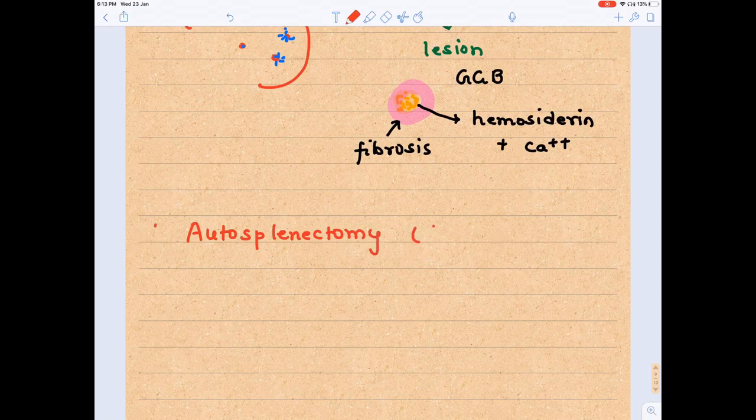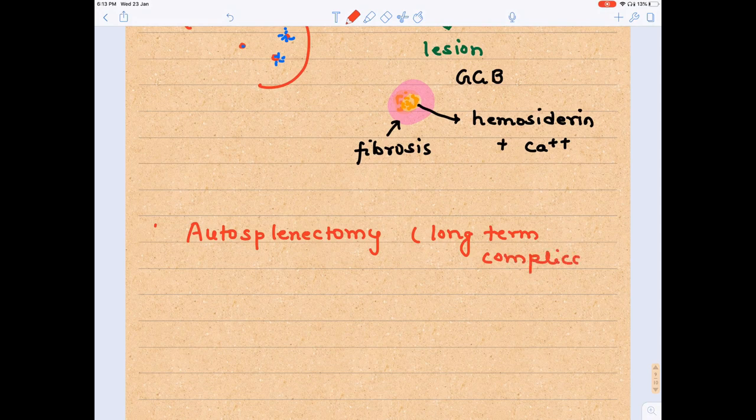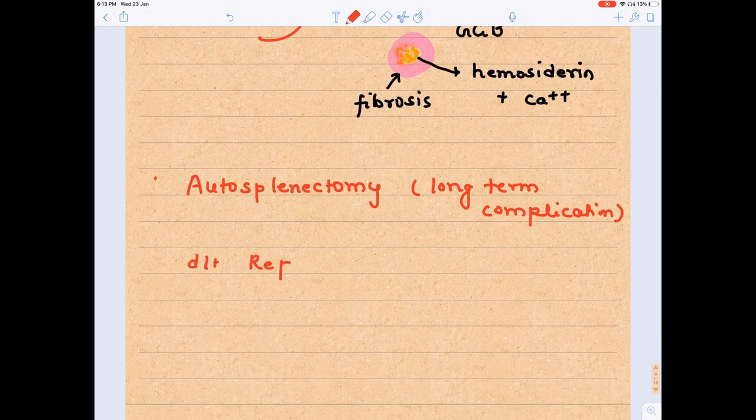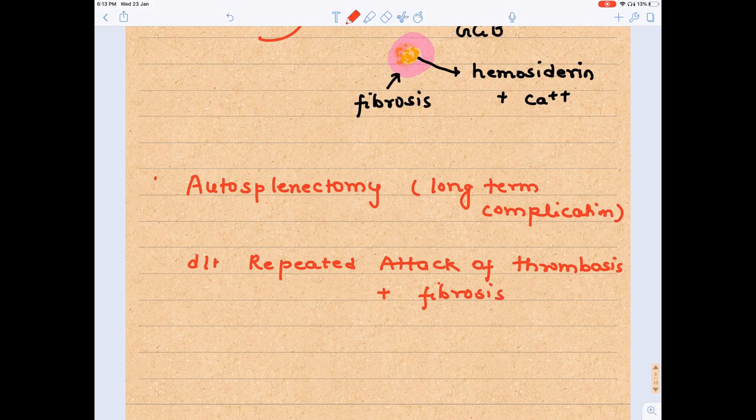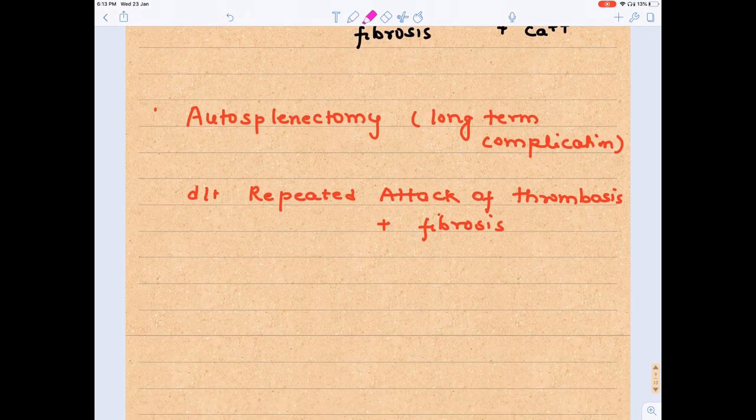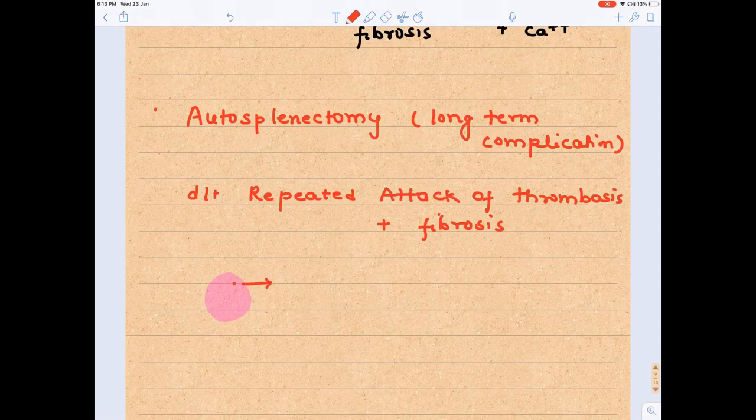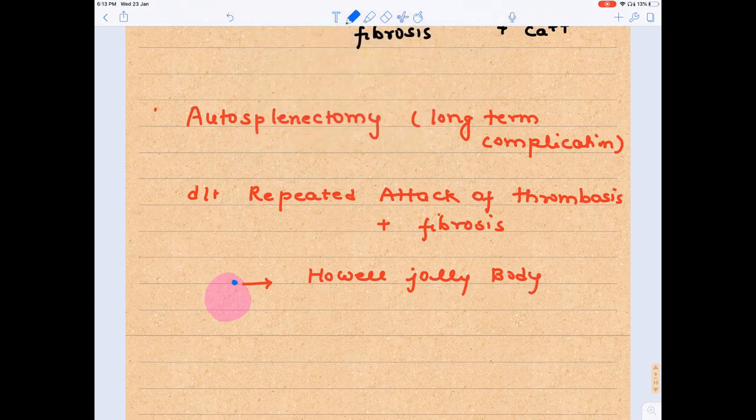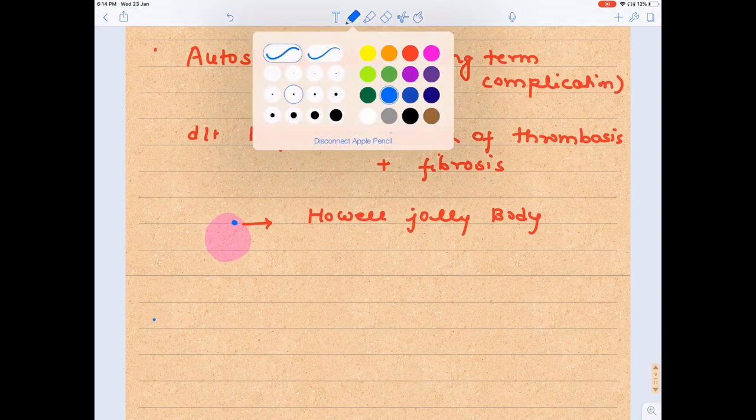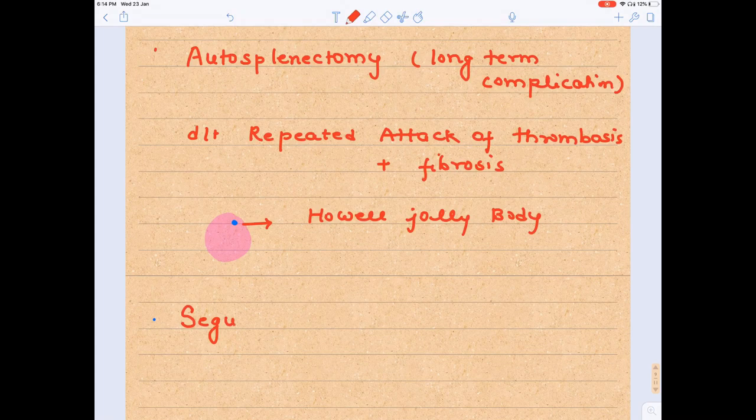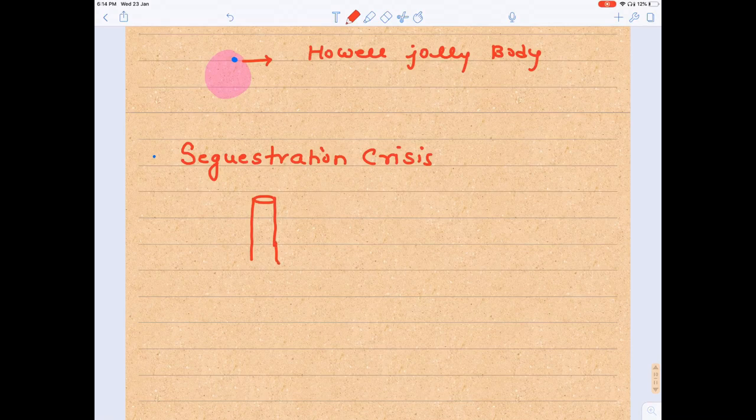Autosplenectomy. What is autosplenectomy? Small fibrotic spleen, which is a long-term complication of sickle cell anemia. This occurs due to repeated attacks of thrombosis followed by fibrosis. If the spleen of the patient is gone, either iatrogenically or due to autosplenectomy, in the RBC you will see this small blue dot known as Howell-Jolly body. Remember, Howell-Jolly body is seen whenever spleen is removed iatrogenically or due to disease.